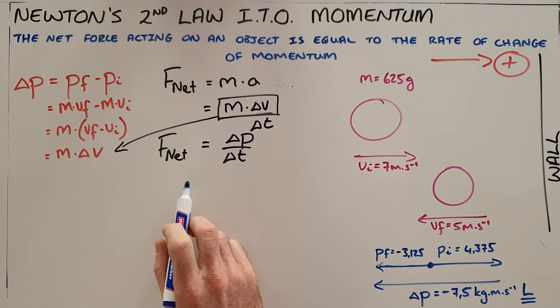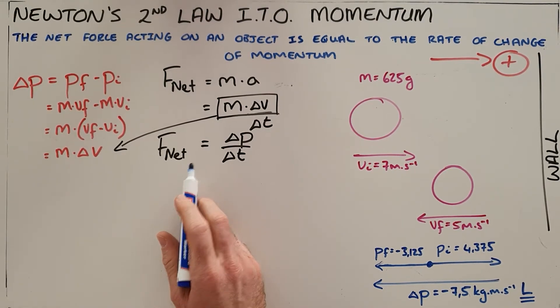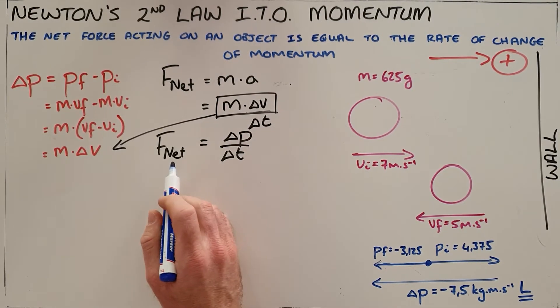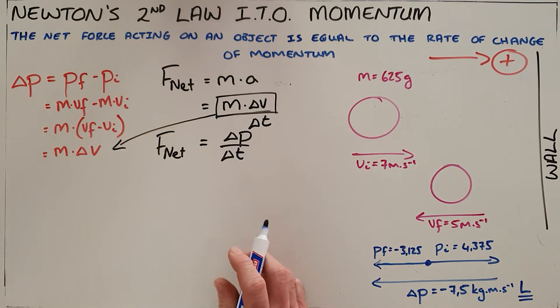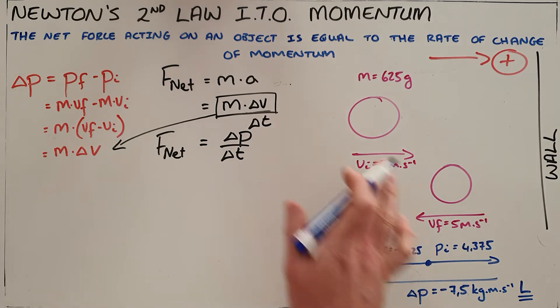So with Newton's second law in terms of momentum, we can now calculate the force that is required in order to affect a certain change in momentum. If we look at the example we did in the previous video of a ball initially traveling at 7 meters per second,